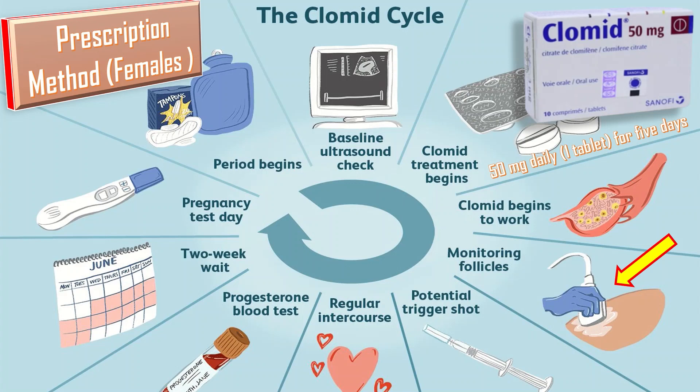If a mature follicle of about 20 mm is found and an injection of LH is given, ovulation can occur between 24 to 48 hours, with the average time being within 36 hours. The couple is then advised to have intercourse for the next 3 days starting from that day. After the next missed period, a pregnancy test is done after 2 weeks.